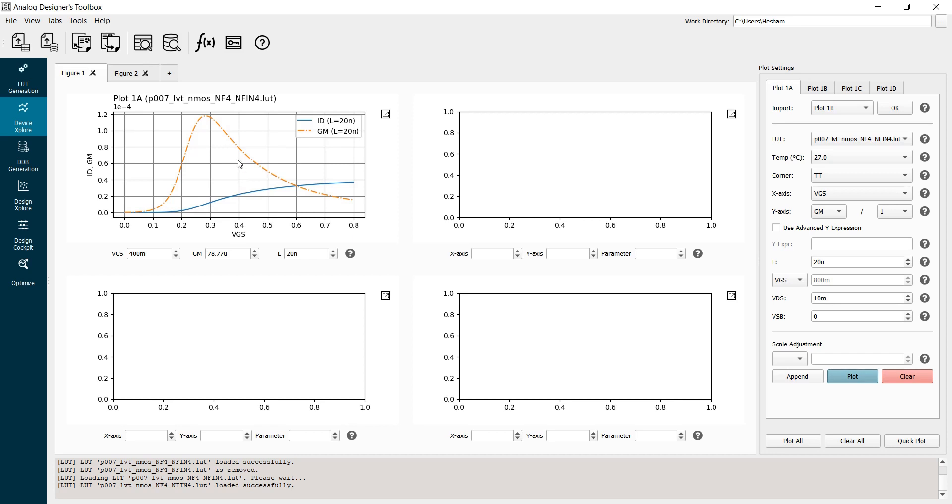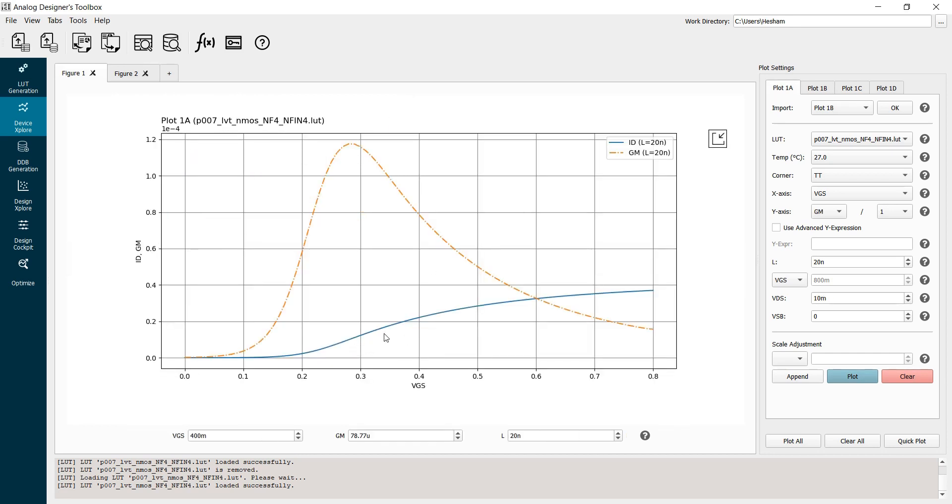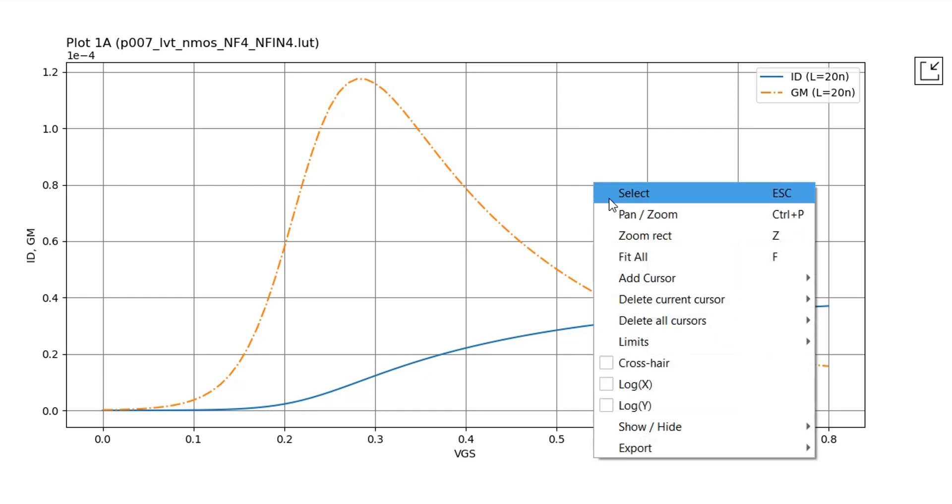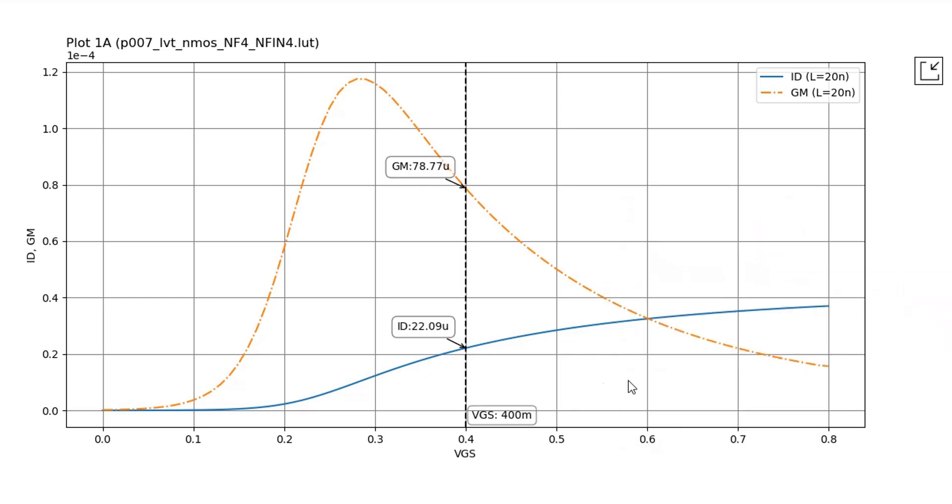Now I have my drain current and I have GM, the transconductance. I can maximize the plot like this. As you can see, the drain current is not really linear and the slope, which is the GM, varies a lot with VGS. The slope is not constant. So to get a very rough estimate of VT, let's say that I will linearize my characteristics at the point that has the maximum slope, which is the maximum GM. So I will add a cursor here. I will select a vertical cursor. I will then move my cursor to the point that has the maximum GM and I will use this point to extract my VT.